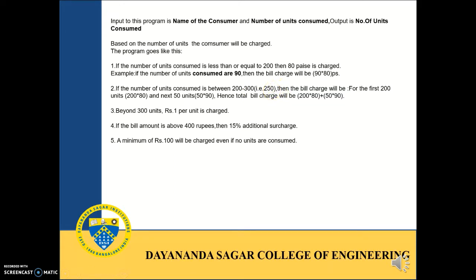For example, if the units consumed are 250, then the bill charged will be: for the first 200 units it is 200 into 80, and for the next additional 50 units it is 50 into 90. Hence the total bill charged will be 200 into 80 plus 50 into 90. The next condition is if the number of units are beyond 300, then 1 rupee per unit will be charged.